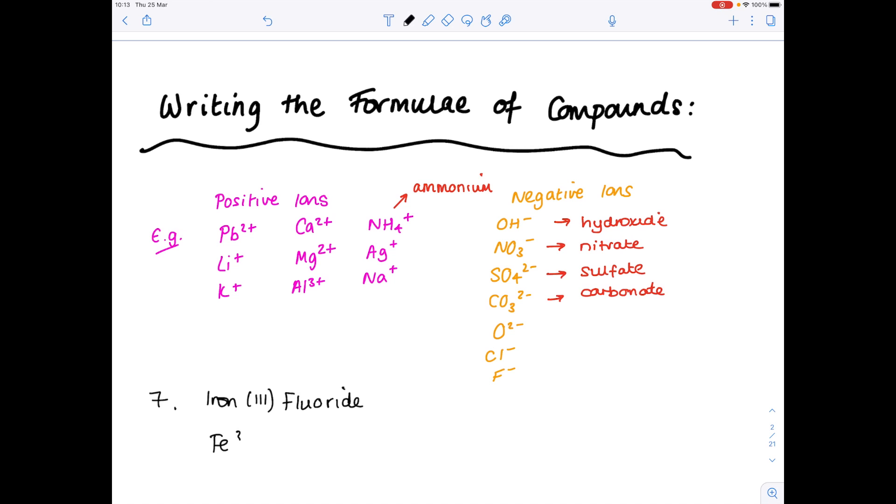Now we have iron(III) fluoride, so that's Fe3+, F-. You're going to need 3 F- in order to counteract that Fe3+, so your final answer looks like this. Just to show you that swap-and-drop would have worked. The 3 comes down to pass the fluorine. The invisible 1 comes down to the iron, so your final answer here is FeF3.